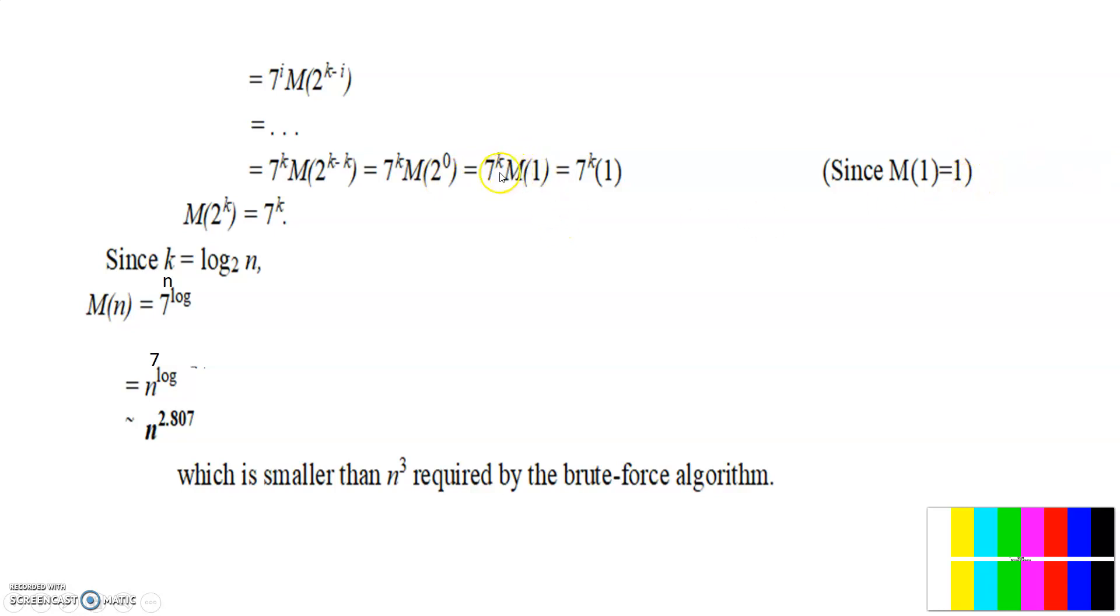So if you substitute the M1 value, then you will get 7 to the power of k. That is M of 2 to the power of k is equal to 7 to the power of k. So now if N value is 2 to the power of k, then what is the value of k now? k is equal to log N here.